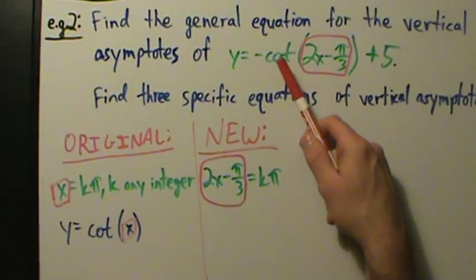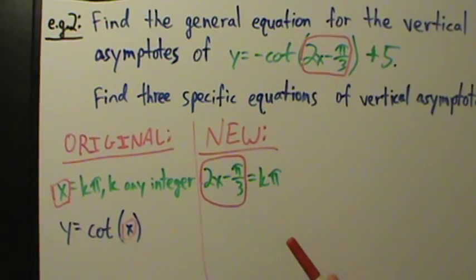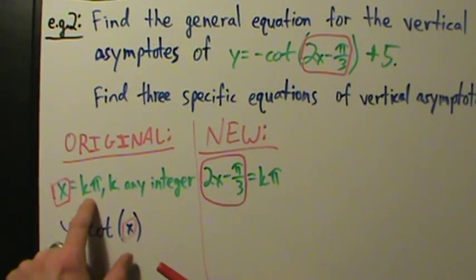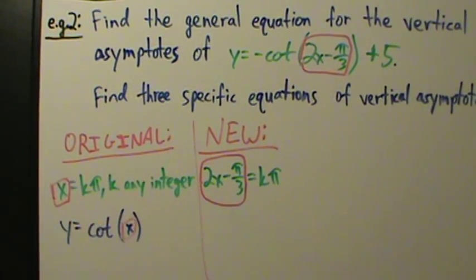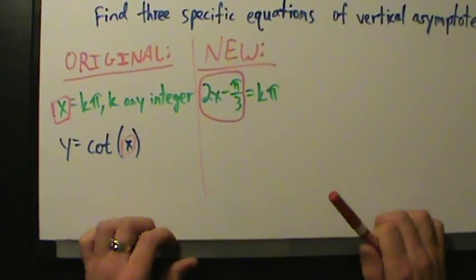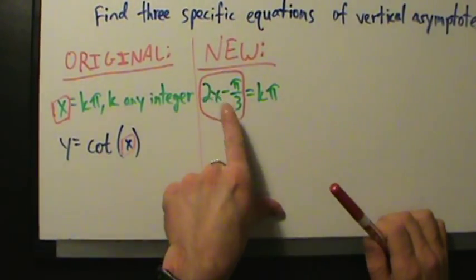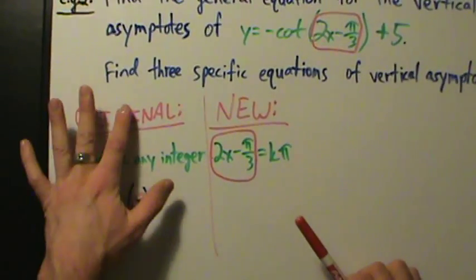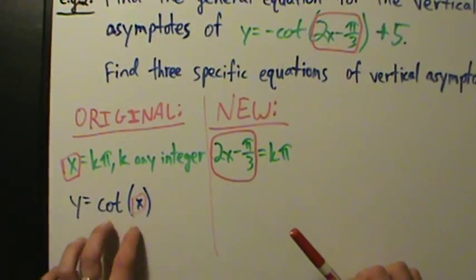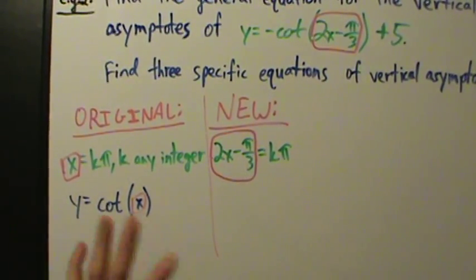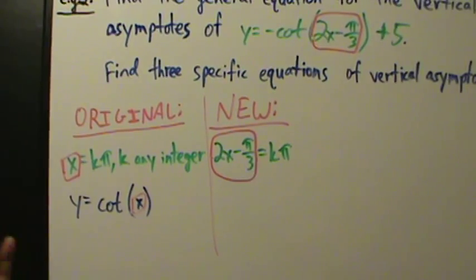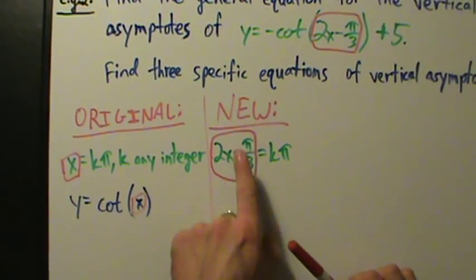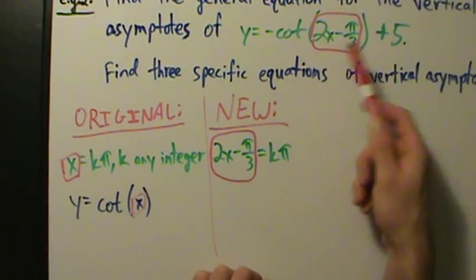Cotangent tells us to use k pi, because for cotangent of x, the vertical asymptotes are at x equals k pi — we explained that in a different video. This is the new general equation for our new function. The original cotangent function is untransformed, unstretched, unshifted, and this is the new general equation for the transformed function we were given.